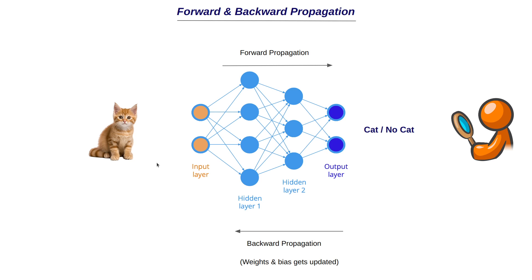When we use a batch size of 32, those 32 images flow through forward propagation, we get predictions for all 32 images, find the total loss function value — also called cost function — calculate the gradients, and update the weights and biases. Then the next batch of 32 images does the same thing. We repeat this for all batches until the entire epoch is done, and then repeat across multiple epochs. Once training is complete, we have a better neural network that gives more accurate predictions. That's the concept of loss function, optimizer, forward propagation, and backward propagation.